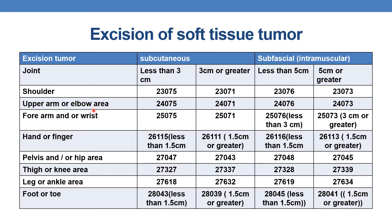Coming to upper arm or elbow area. For excision of subcutaneous soft tissue tumor: if less than 3 centimeters, CPT is 24075; if 3 centimeters or greater, it is 24071. For excision of intramuscular soft tissue tumor of upper arm or elbow: if less than 5 centimeters, CPT is 24076; if 5 centimeters or greater, it is 24073.